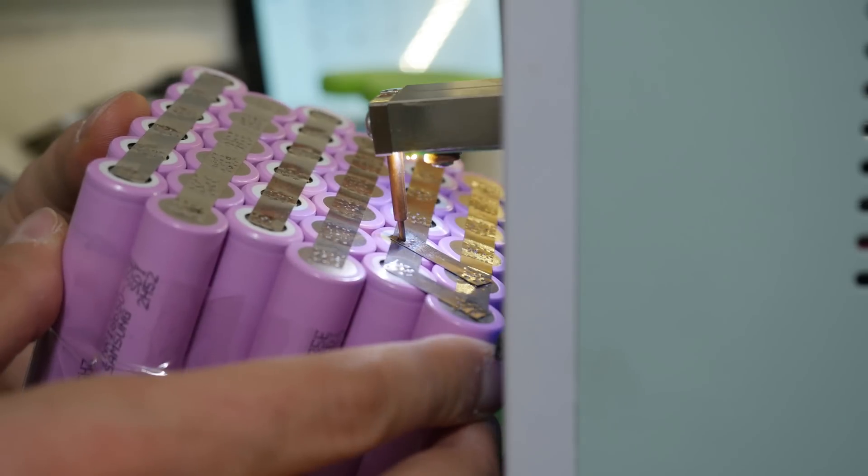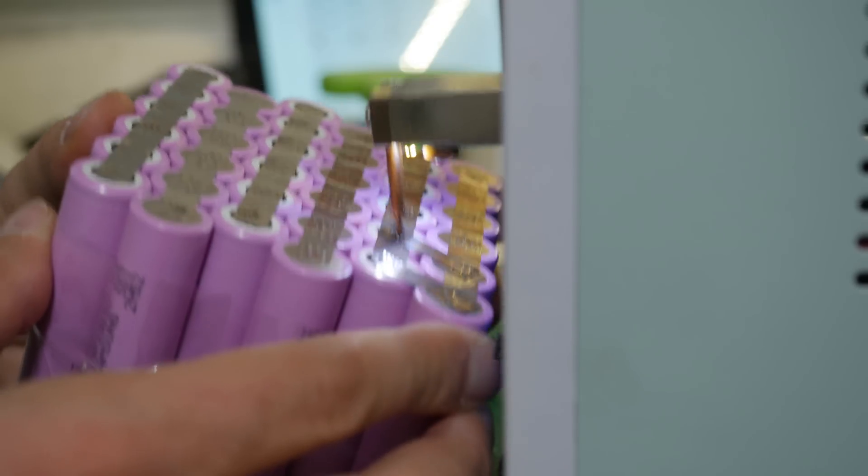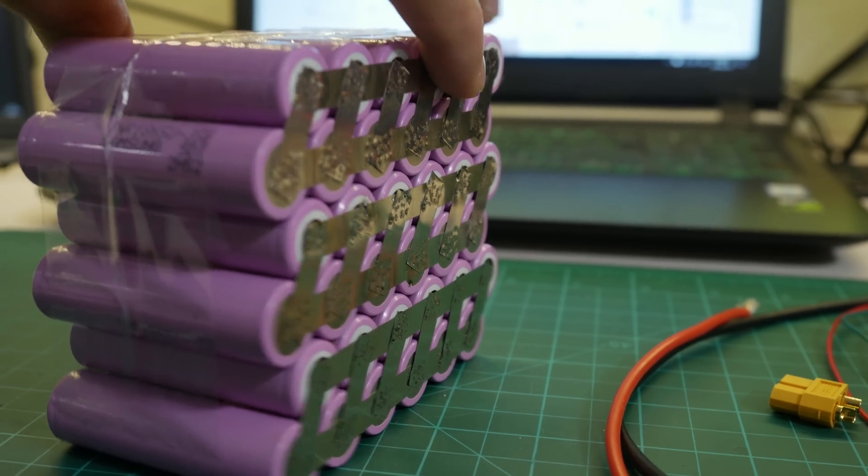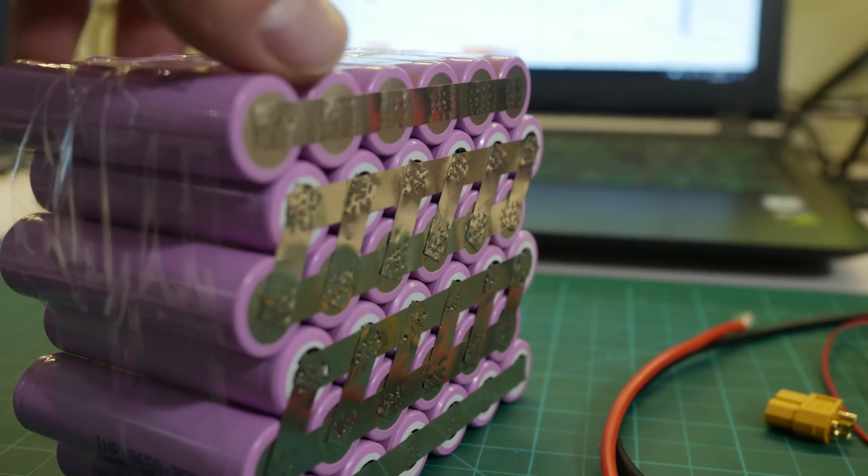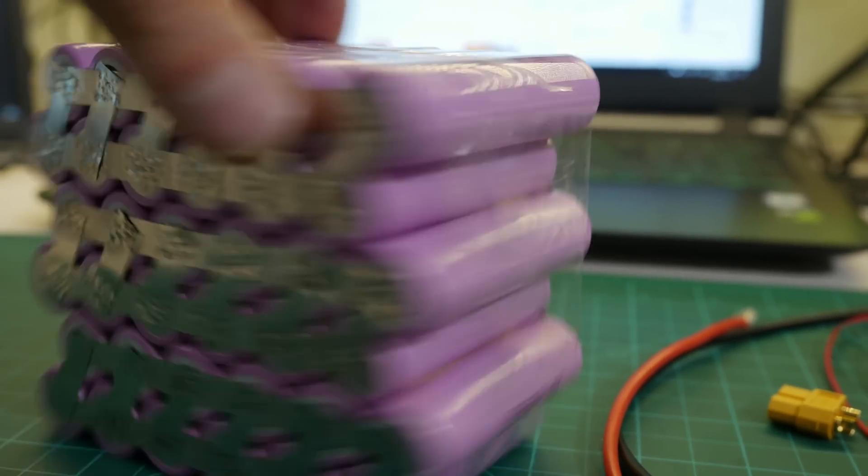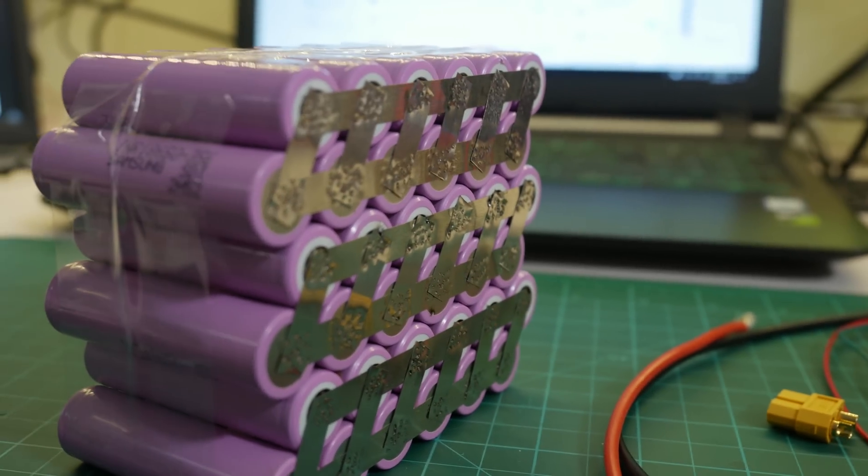I then cut the necessary number of nickel strips for the series connections and started welding away. In no time this was done and using the multimeter I was able to verify that indeed all connections were good and the total battery pack voltage was what it should be for a 6S pack.